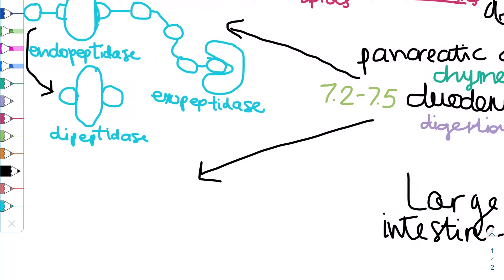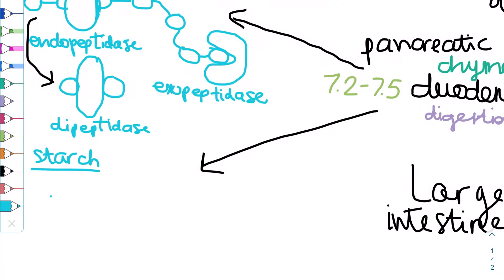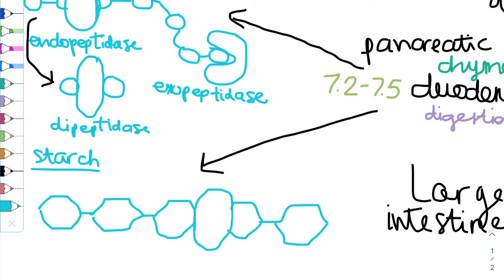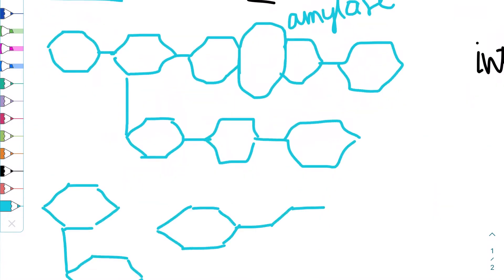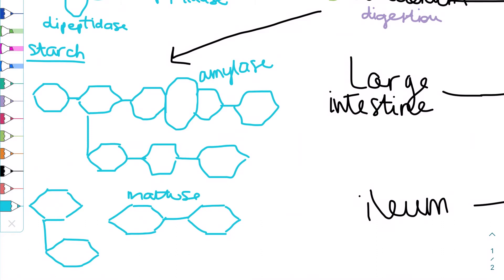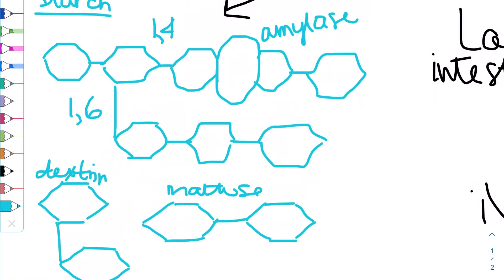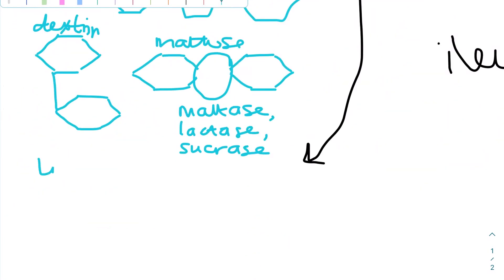Starch is made of monosaccharides like glucose bonded with glycosidic linkages to create amylose, which has 1-4 bonds, or amylopectin, which also has 1-6 bonds. Amylase can break down 1-4 bonds in starch, but not the 1-6 bonds. It also doesn't react with polysaccharides that have broken down into disaccharides. These small compounds, like dextrin and maltose, are broken down by enzymes immobilized in epithelial cells of the small intestine, such as maltase, lactase, and sucrase.